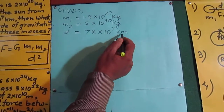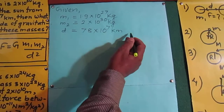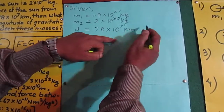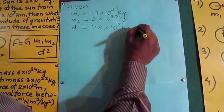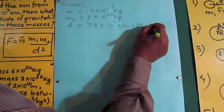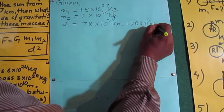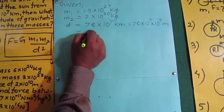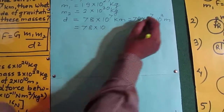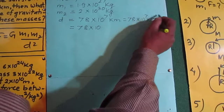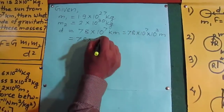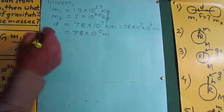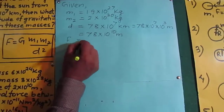Kilometers are not in the SI system, so we need to convert to meters. To convert, multiply by 1000, which is 10³. So D = 78 × 10⁷ × 10³ = 78 × 10¹⁰ meters. When the bases are the same, the powers are added: 7 + 3 = 10. Our distance is 78 × 10¹⁰ meters, and the gravitational force F is what we need to find.